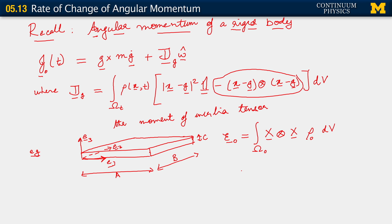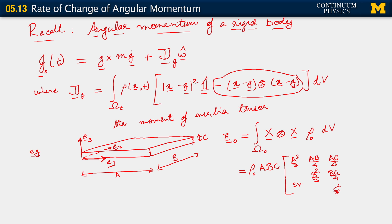If you go through and carry out these calculations, then you end up with an expression of the following form: rho_0 · A·B·C multiplying a symmetric matrix with entries A²/3, AB/4, AC/4 on the first row; B²/3, BC/4 on the second row; and C²/3 on the third row.